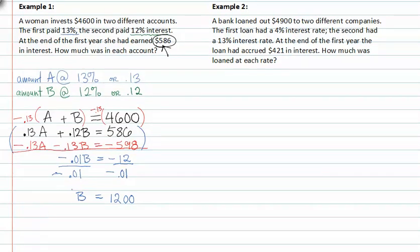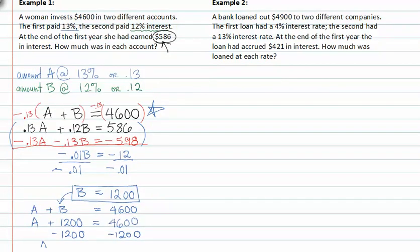From here I can solve for a, since I know a plus b is equal to $4,600 from up here. I can then substitute $1,200 in for b, and I get a plus 1200 is equal to $4,600. Subtracting 1200 from both sides, I get a is equal to $3,400. So $1,200 was invested at 12 percent, and $3,400 was invested at 13 percent.